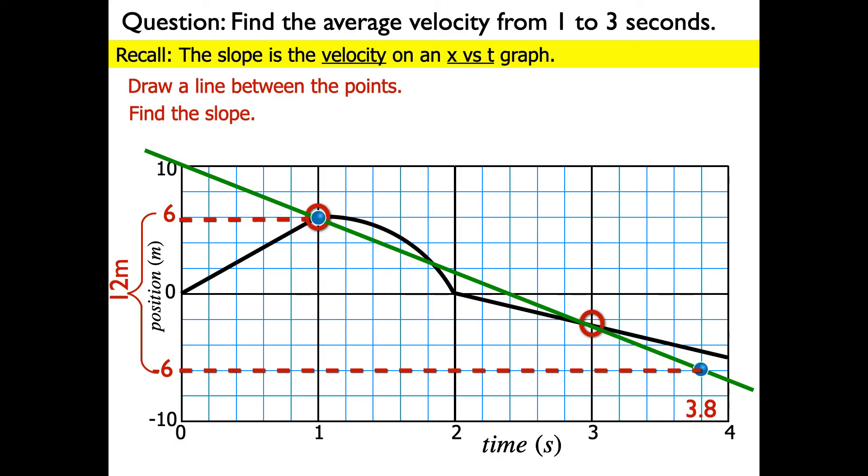And the run is going to be the difference between my two points along the horizontal axis, which is going to be 3.8 minus 1, or 2.8 seconds. So the average velocity, which is equal to the slope, is the rise over run, which is negative 12 divided by 2.8. So that's going to equal negative 4.29 meters per second.